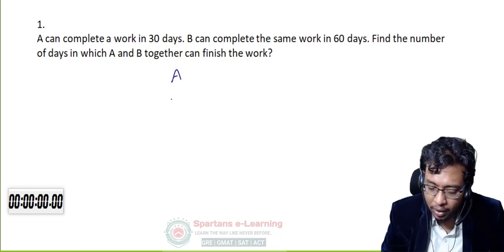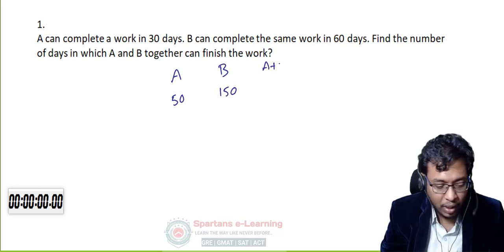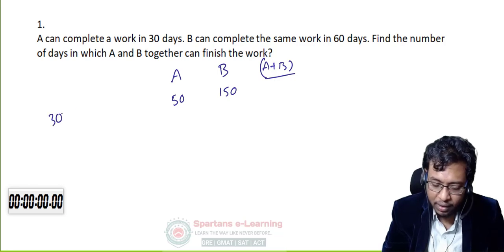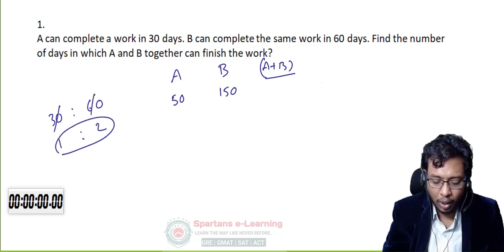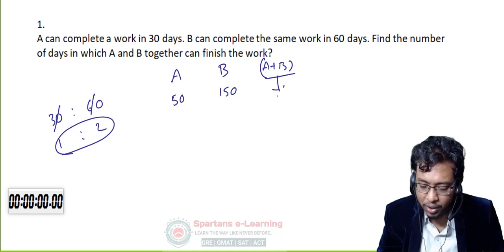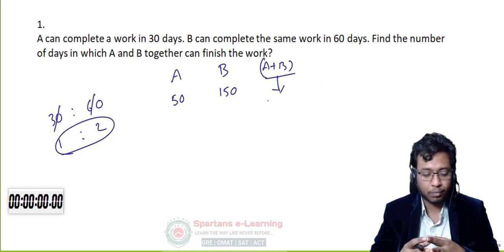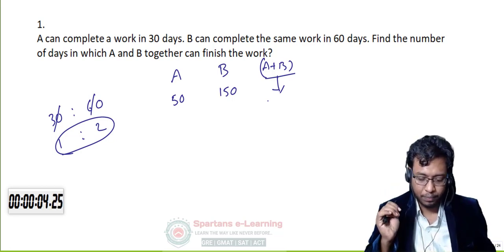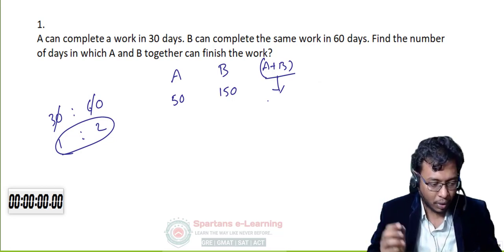Another example: A can do a piece of work in 50 days, B can do it in 150 days. A plus B can do the work in how many days? The ratio of 50:150 is 1:3. So A+B = 150 × 1/(1+3) = 150/4 = 37.5 days.